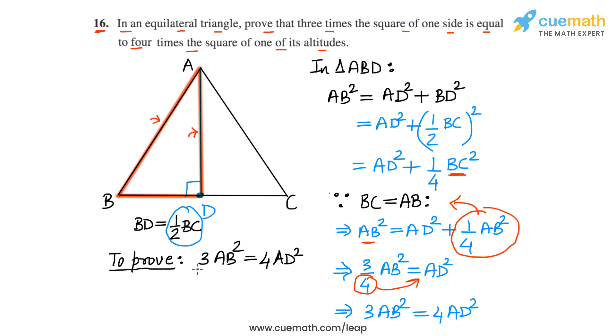And this is what we had to prove three times the square of a side is equal to four times the square of an altitude. So this completes our proof for question number 16.